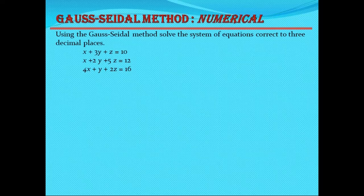The iteration method — that is, the Gauss-Seidel method or Jacobi method — will converge only if the equations are diagonally dominant. That is, the diagonal term must be greater than the sum of the other elements. Then and only then will we get that the methods are converging.